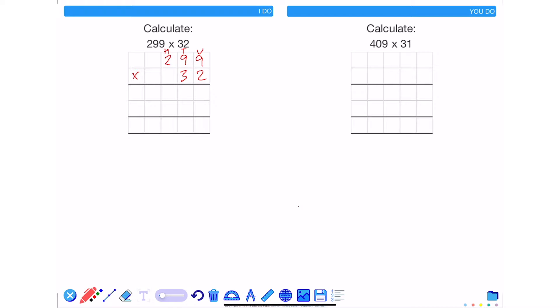The way this technique works is in this row we're going to answer the question 299 times by 2. In the second row we're going to do 299 times by 30. We're then going to add our answers together and we'll have 299 times by 32.